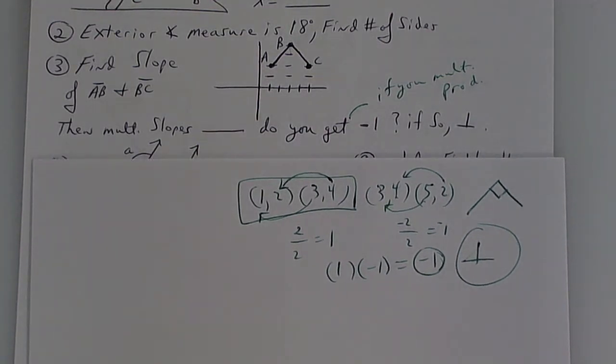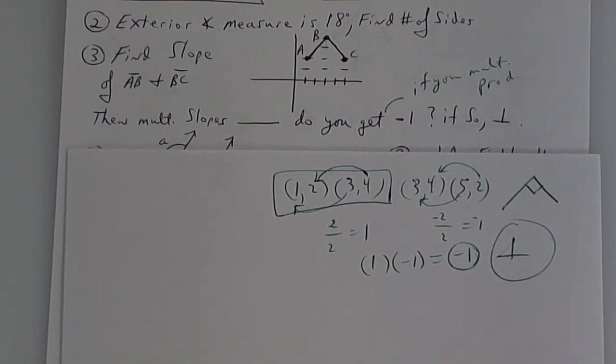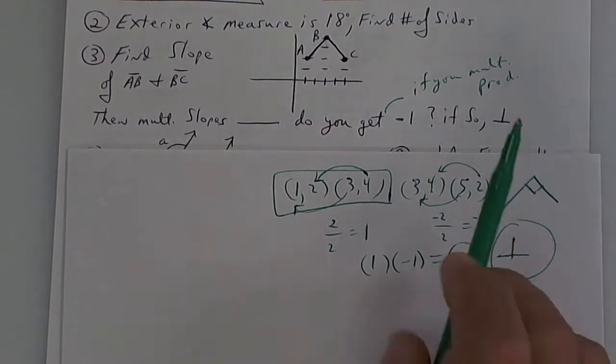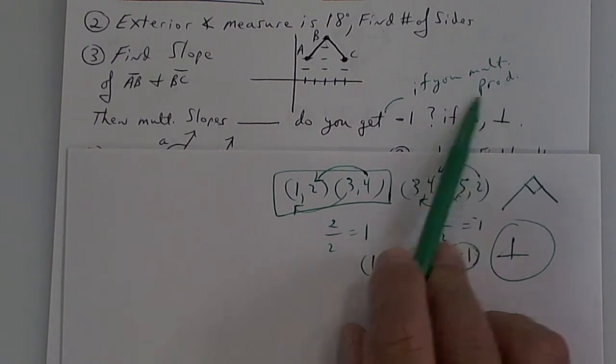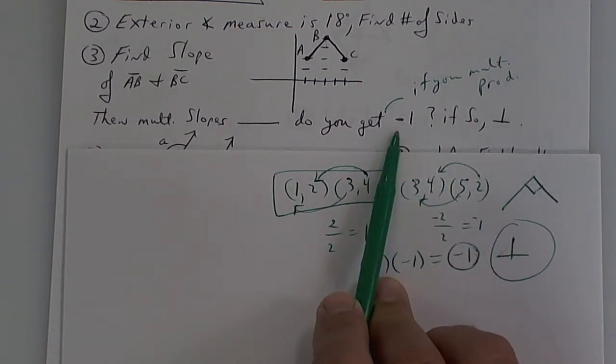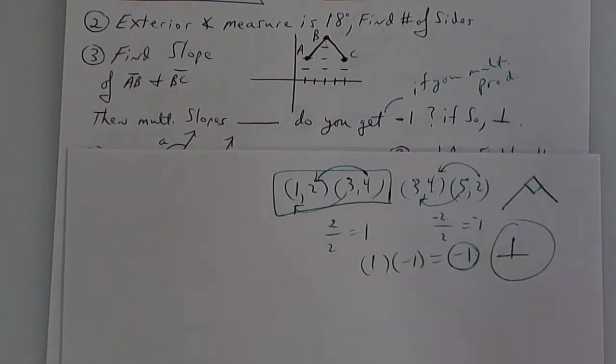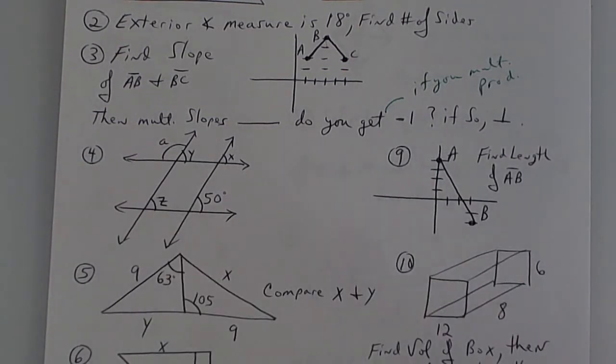Would the answer on the test be perpendicular or negative 1? The way they worded it was, if you do the product of both slopes, what do you get, basically? Or they say, do you get negative 1? But you've got to know that if you multiply them and you get negative 1, they're perpendicular. That's the implication. Number 4.